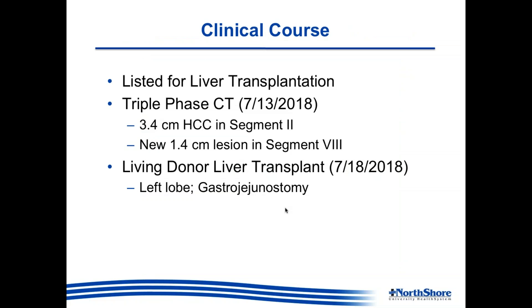Following these findings, the clinical course was as follows: she was listed for liver transplantation. Repeat imaging showed improvement in the size of the liver lesion in segment 2 from 4 centimeters to 3.4 centimeters; however, she unfortunately had a new 1.4 centimeter lesion in segment 8. Within a few days in mid-July, it was arranged for her to have a living donor liver transplantation, which was successfully carried out. At the same time, a gastrojejunostomy was also performed as a means of bypassing the ulcerated antral area.